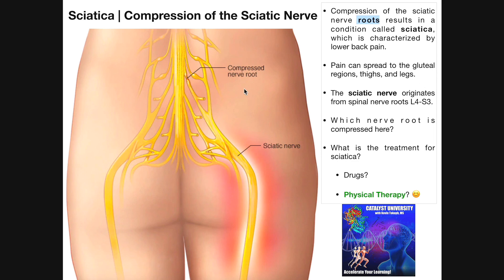Looking at the image, we can identify the compressed root. The filum terminale is visible — that would be the coccygeal nerve. Counting up: S5, S4, S3, S2 — this would actually be the S1 nerve root that's compressed. S1 is within the range of the sciatic nerve, so this would produce sciatica. But it could be any of these — L4, L5, S1, all the way through S3. Compressing just one nerve root can cause pain in the entire region supplied by the sciatic nerve: lower back, gluteal region, and all the way down into the legs.